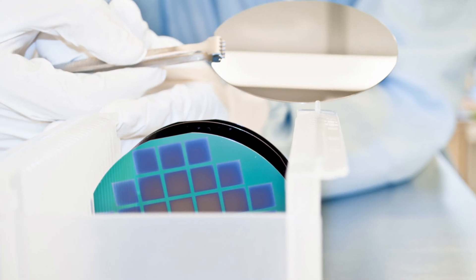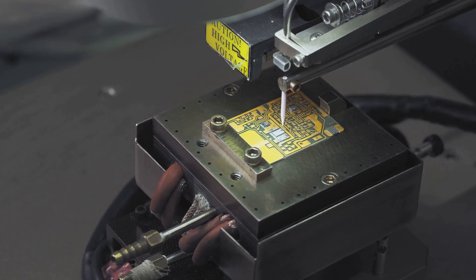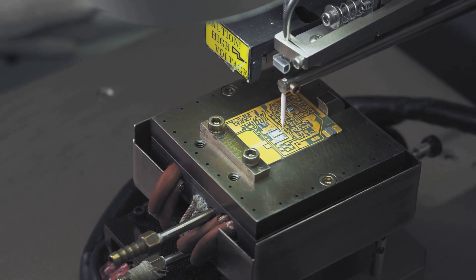Chips are made using light. Light is used to etch patterns onto silicon wafers. These patterns define the transistors. As transistors get smaller, we need shorter wavelengths of light to create them.